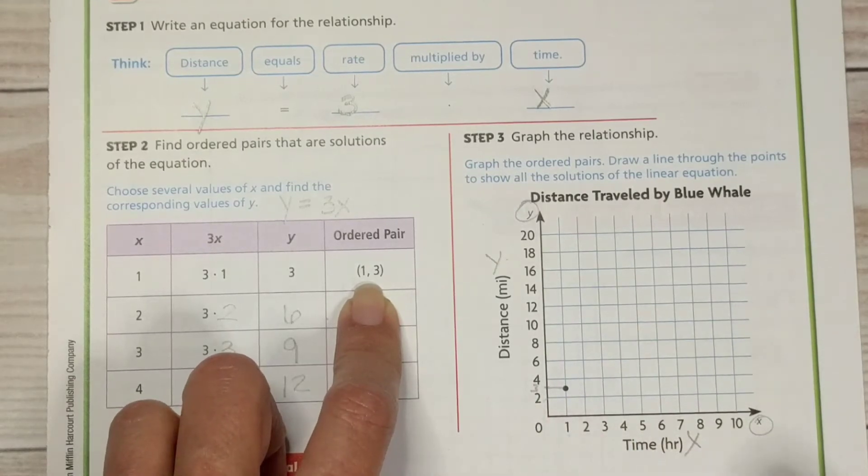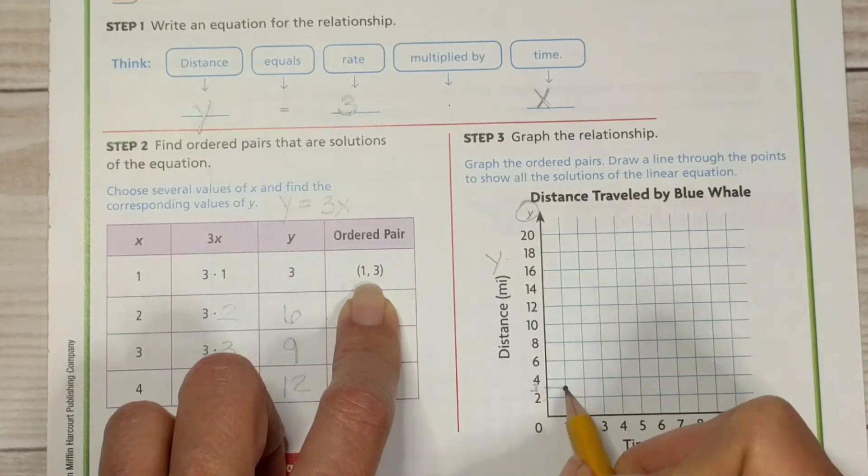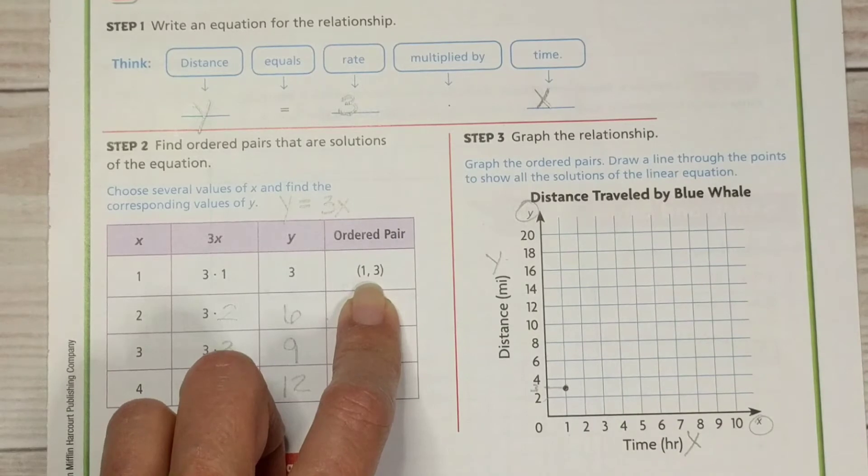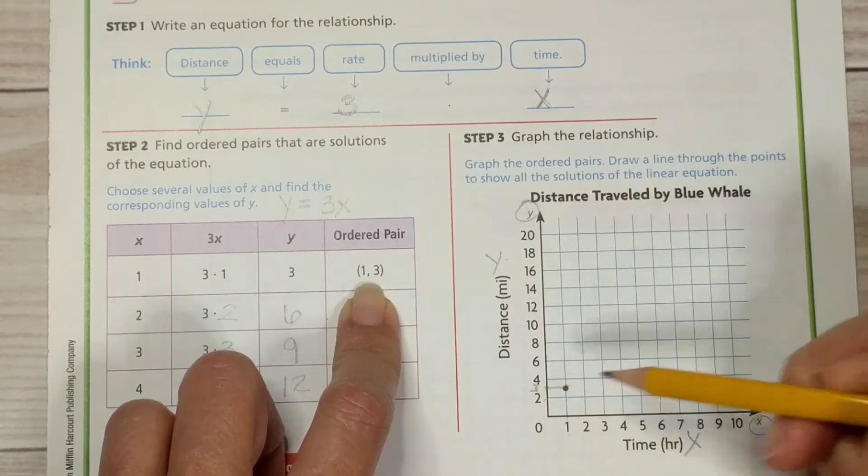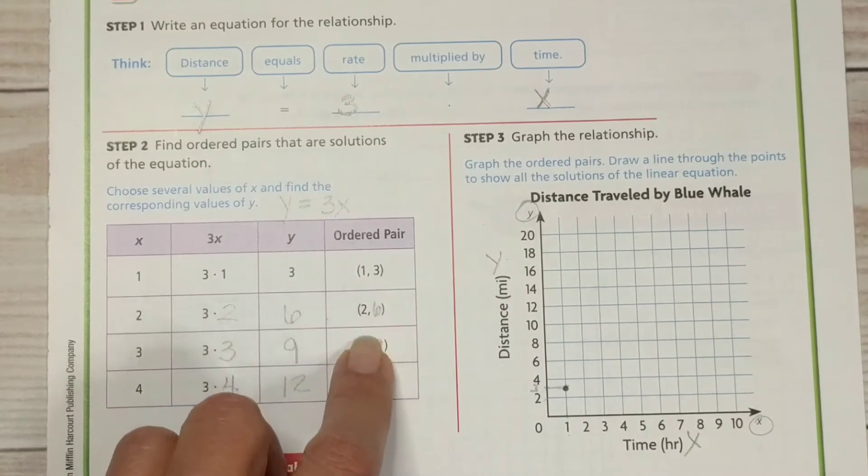So with our first example where our ordered pair is 1, 3, we have to know that 3 comes between 2 and 4. And so we put our little dot right there where the 1 and the 3 intersect or meet.